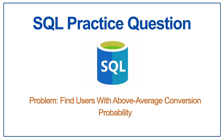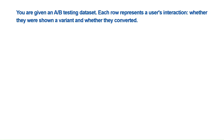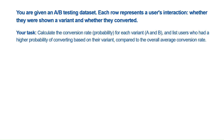The problem statement is: you are given an A/B testing dataset where each row represents a user's transaction — whether they are shown a variant and whether they converted or not. Imagine you are a data analyst at a tech company running an A/B test. Each user is randomly shown variant A or variant B — these variants could be different landing page designs. After seeing it, the user may or may not convert, meaning they might sign up or make a purchase. Your task is to calculate the conversion rate for each variant and list users who had a higher probability of converting.